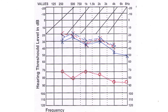Similarly, the maximum air conduction masking level at 1 kilohertz in the above audiogram is the BC threshold of the test ear plus 40 dB (interaural attenuation), which comes out to be 35 dB plus 40 dB, equal to 75 dB.